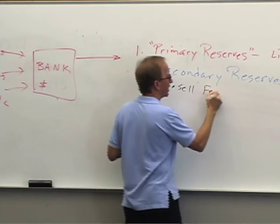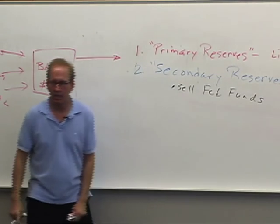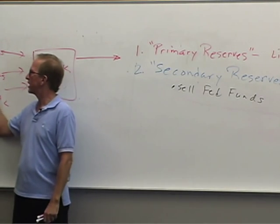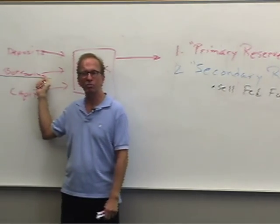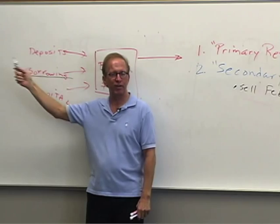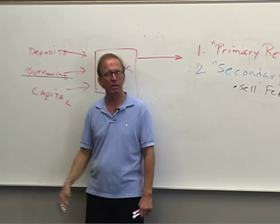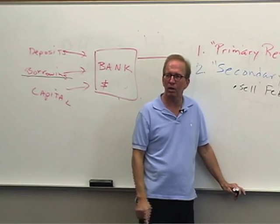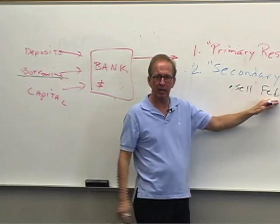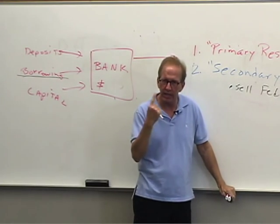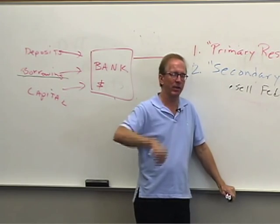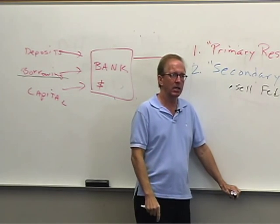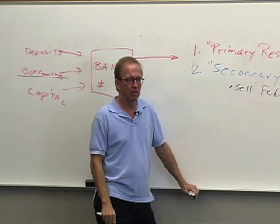The first secondary reserve instrument is selling Fed funds — lending dollars to another bank on an overnight basis. These are funds on the books of the Federal Reserve, transferred overnight, unsecured with no collateral. If a bank has excess reserves, rather than letting them sit doing nothing, it can sell Fed funds to another bank before the day is over and earn interest.